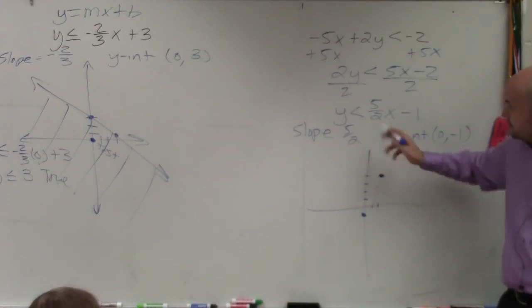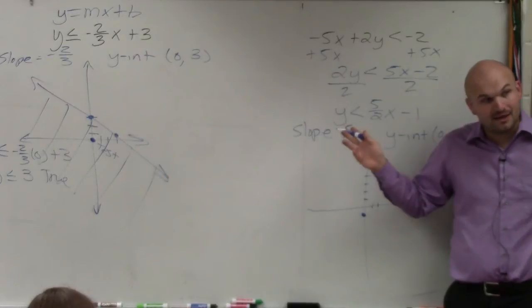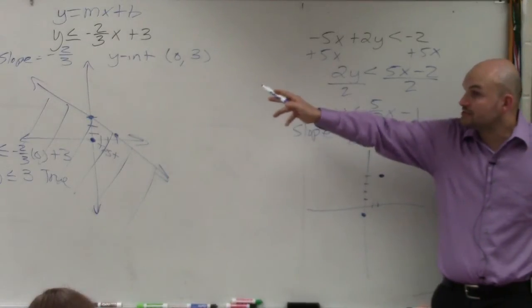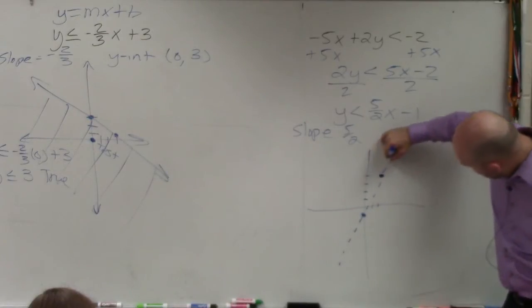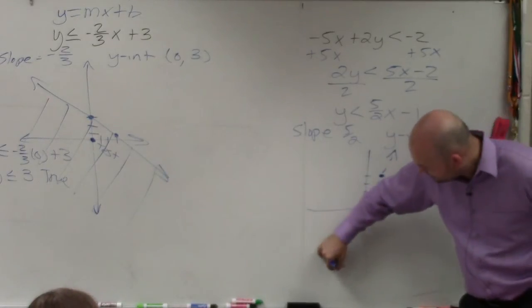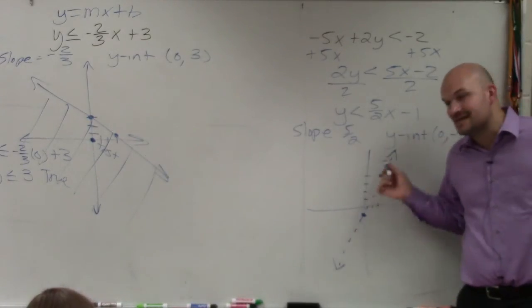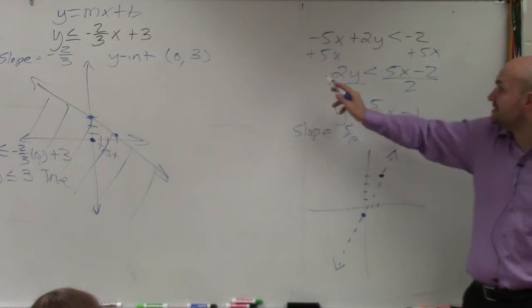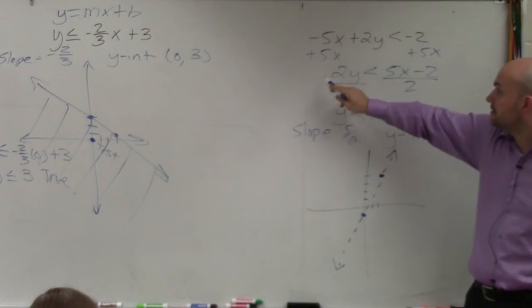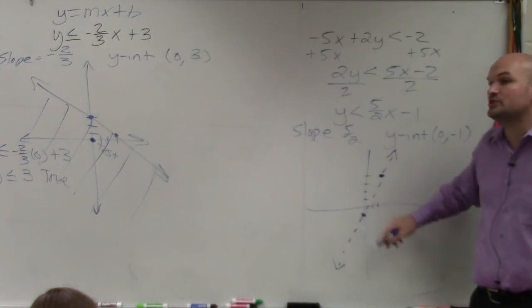Now the difference with this one is this is a less than, not less than or equal to. So now it's going to be a dashed line. And what the dashed line means is any point that's on the line is not a part of the solution. Now you can also say it's less than or equal to. It's less than or equal to, so that means we should shade below the line.